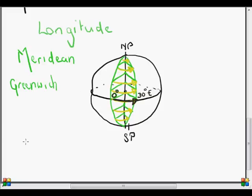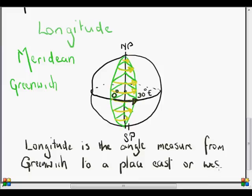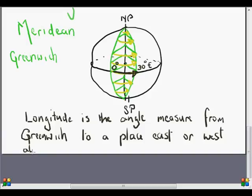Right. So let's once again write that definition down. Longitude is the angle, measured from Greenwich Meridian to a place east or west of Greenwich at the axis of the earth.